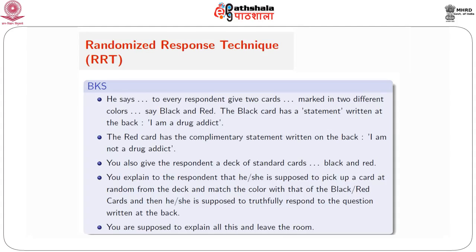To explain again: there is a master black card having the statement "I am a drug addict" at the back, and a master red card having the statement "I am not a drug addict" at the back. As a respondent, you pick up one card at random from the given collection of black and red cards. If that card turns out to be black, you refer to the black master card and answer truthfully to "I am a drug addict." If the card chosen is red, you refer to the red master card and give a truthful answer to "I am not a drug addict." As an investigator, you explain everything to the respondent and then leave the room, leaving the respondent alone. The answer will be either yes or no depending on the question picked up and the actual status of the person.